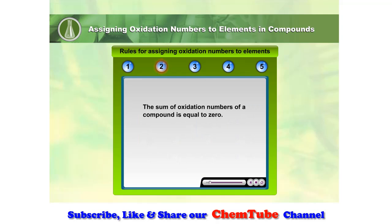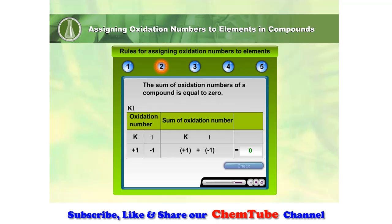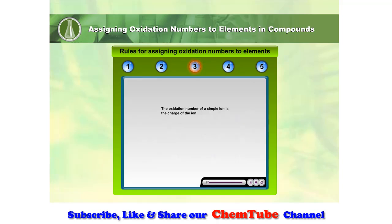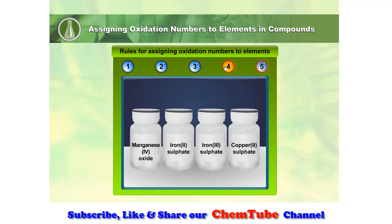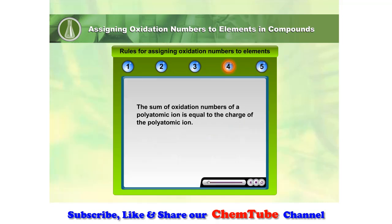Rule two: the sum of oxidation numbers of a compound is equal to zero. Rule three: the oxidation number of a simple ion is the charge of the ion. Rule four: the sum of oxidation numbers of a polyatomic ion is equal to the charge of the polyatomic ion.